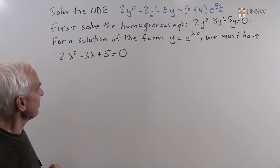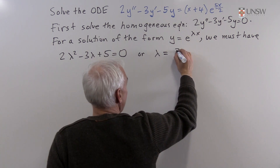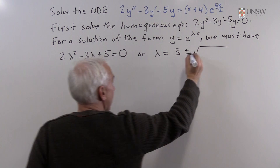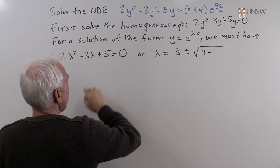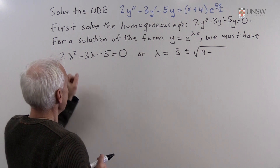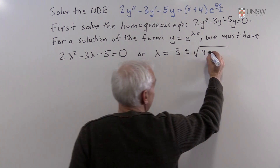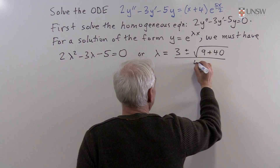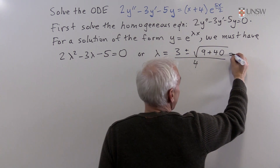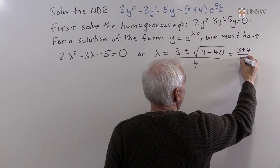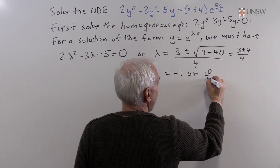We can use the quadratic formula: lambda equals (-b ± √(b² - 4ac)) / 2a. Here -4ac gives us +40, so inside the square root we have 9 + 40 = 49. So we get lambda = (3 ± 7) / 4, giving lambda equals either -1 or 10/4, which is 5 halves.